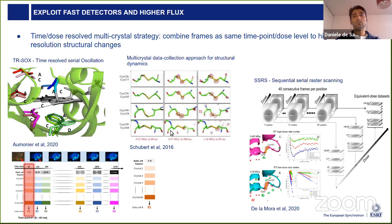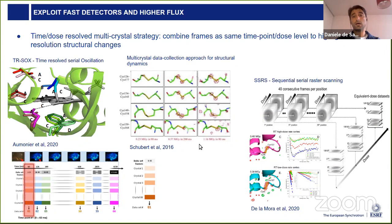With higher flux and faster detectors, it is also possible to define other data collection protocols — for example, time-resolved oscillation, where data from multiple crystals are collected and frames at the same time point are pooled together to assemble a dataset. In this way, we can monitor, for example, the formation of a covalent bond, or follow radiation damage in a disulfide bond over time. A similar approach is serial rastering — exposing still positions across a solid support rather than with oscillation.